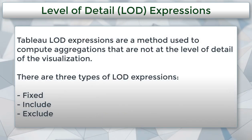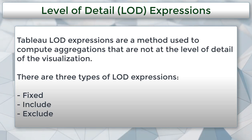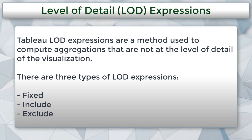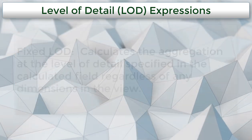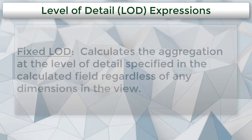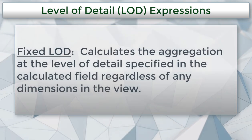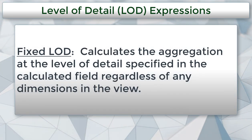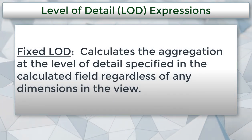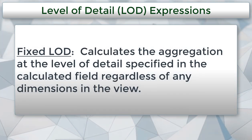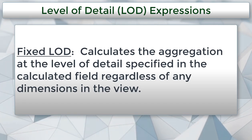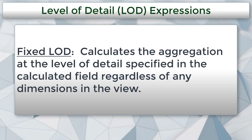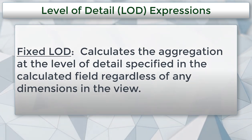Tableau Level of Detail Expressions are a method used to compute aggregations that are not at the level of detail in the visualization. There are three different types: fixed, include, and exclude. A fixed level of detail expression calculates the aggregation at the level of detail specified in the calculated field, regardless of any dimensions in the view. We'll be looking at examples of this.